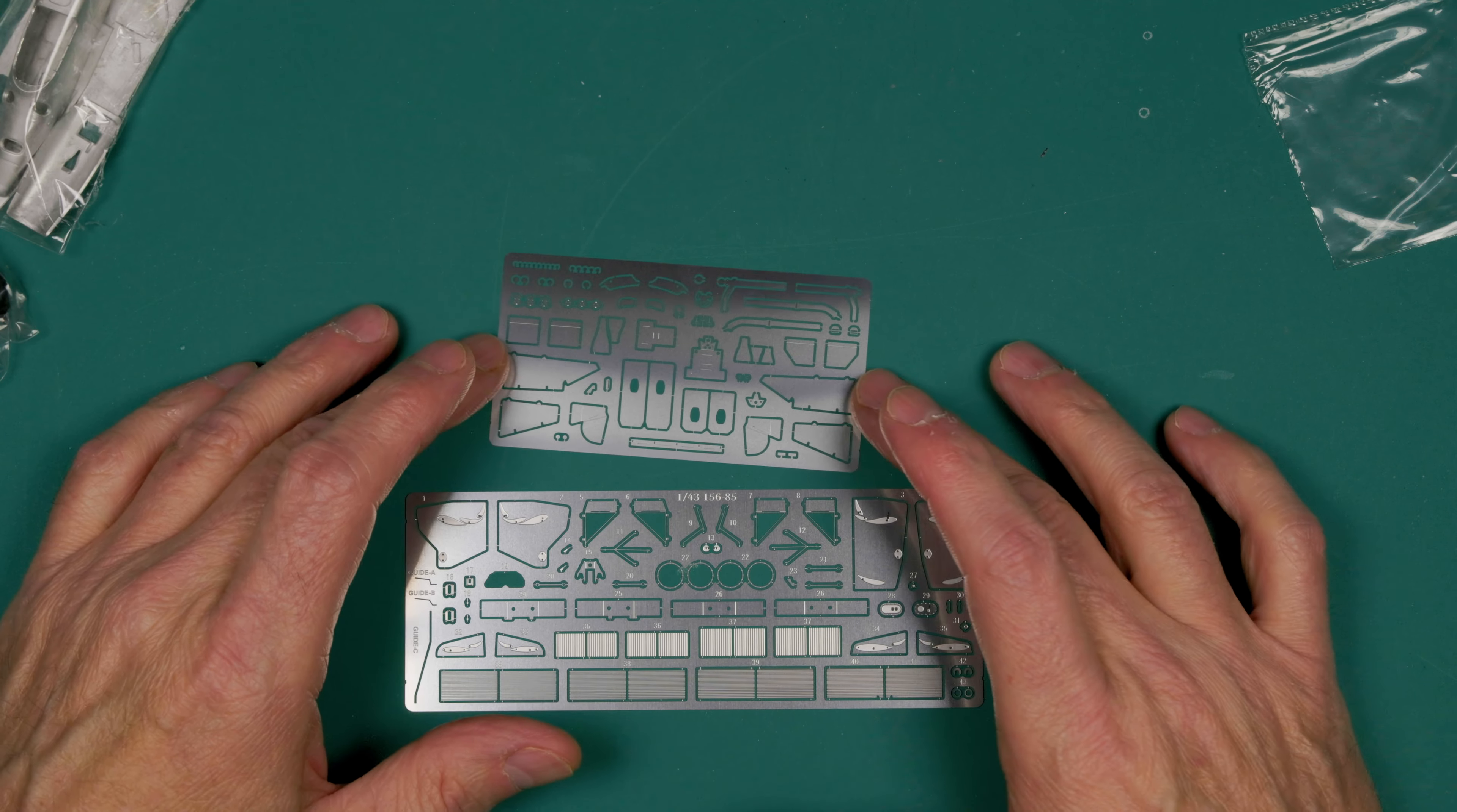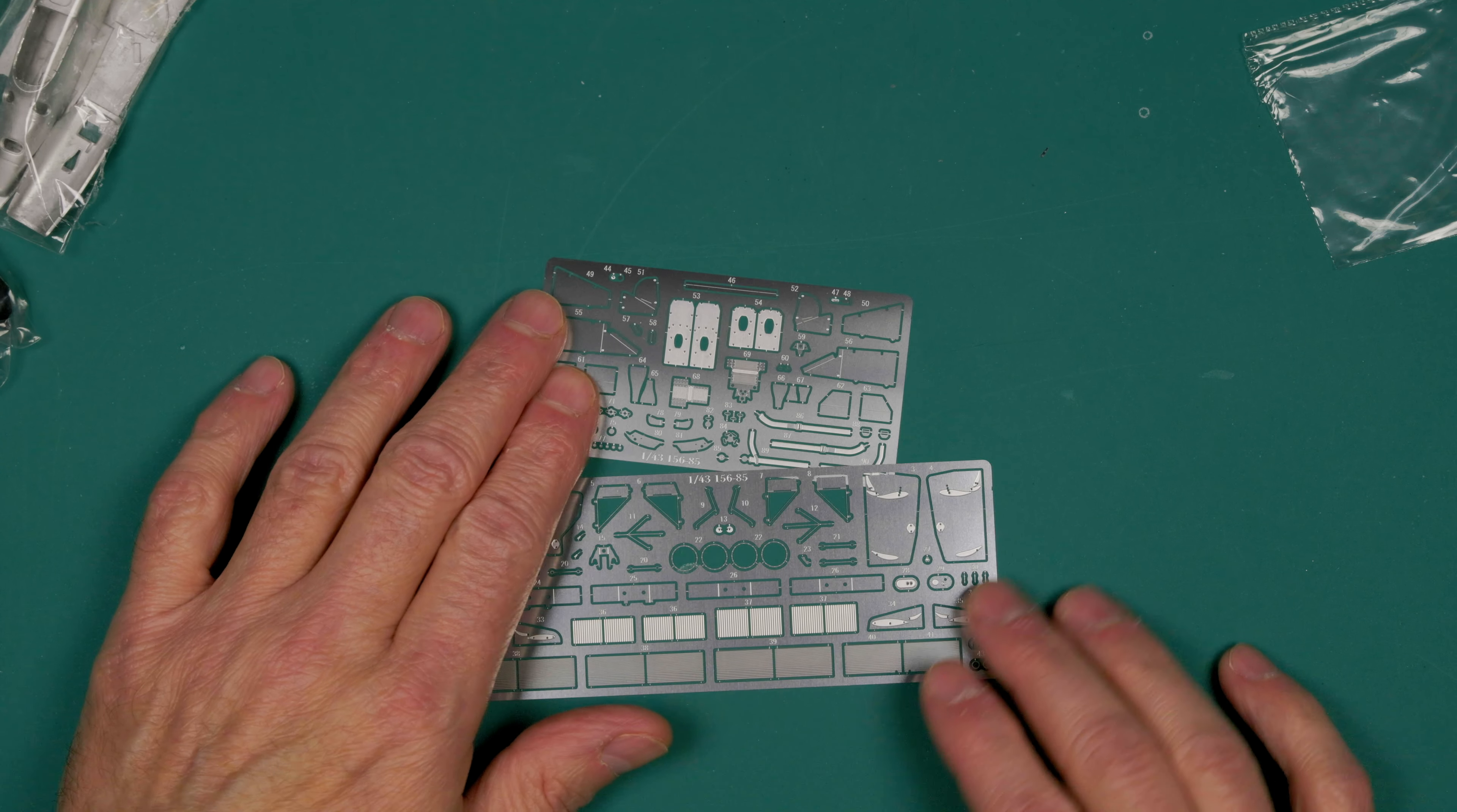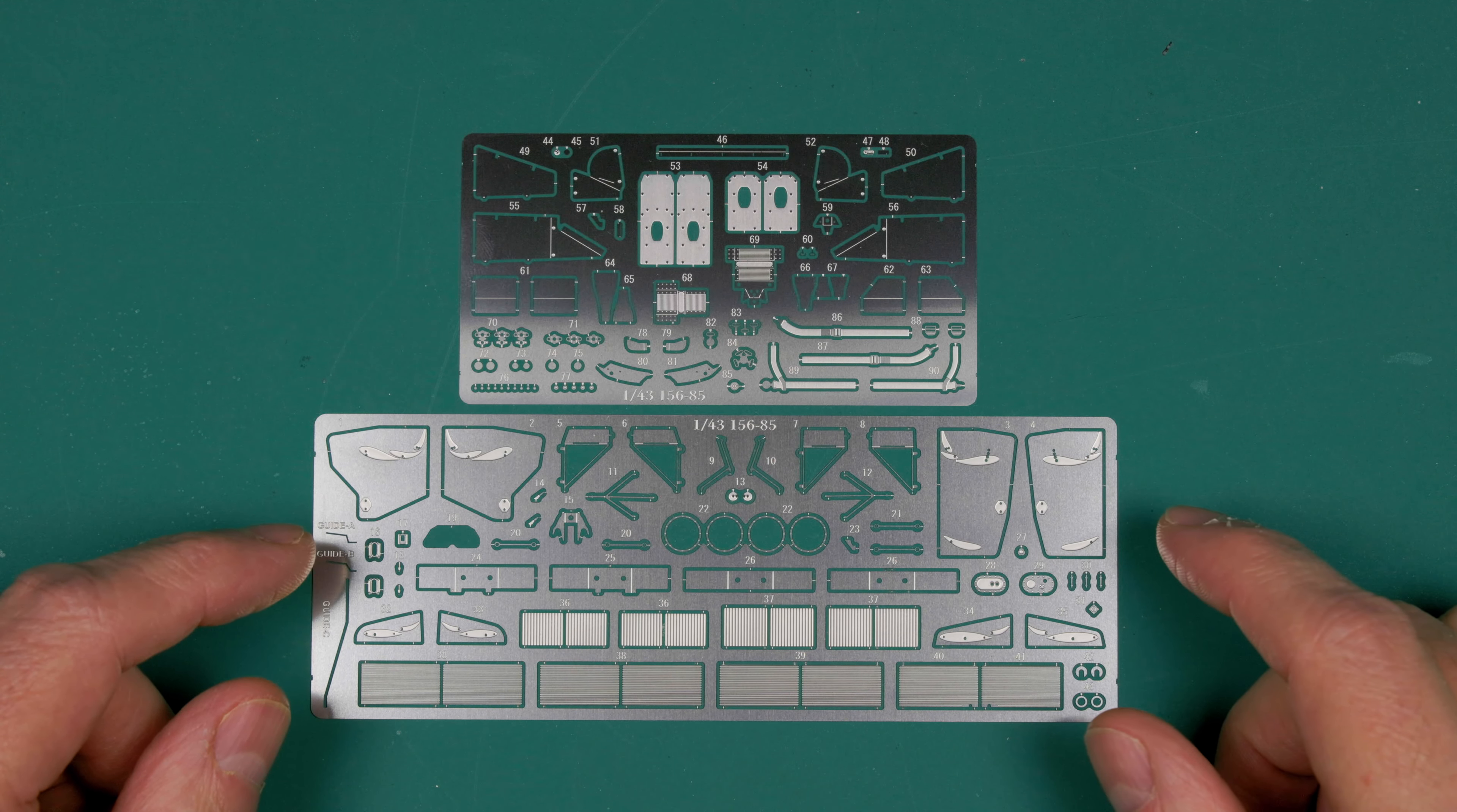There is the photo etch that's included. This one's, well, they're both actually super thin. This one's a little bit thicker than this one. This one's really almost paper thin. Lots of little tiny photo etch stuff.